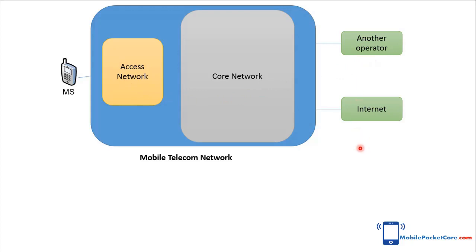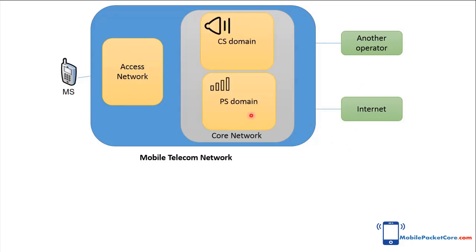The Core Network contains two parts: the CS Domain and the PS Domain. CS refers to circuit switching, while PS refers to packet switching. The CS Domain handles voice calls, while the PS Domain handles data sessions.